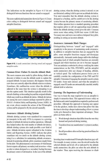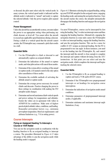Investing time to understand FD/autopilot functions pays off. For example, in many systems, once the aircraft reaches the selected altitude and levels off as indicated by the altitude mode enunciator, the pilot can select the next altitude in the window. Then, upon receiving the clearance to climb or descend, the pilot must select only the vertical mode. In many systems, the vertical speed mode is indicated and the altitude mode is indicated as armed and ready to capture the selected altitude. Only the power requires pilot manual control.